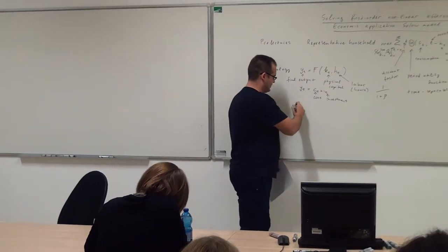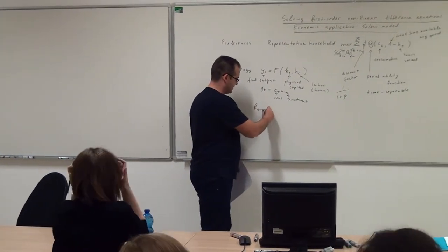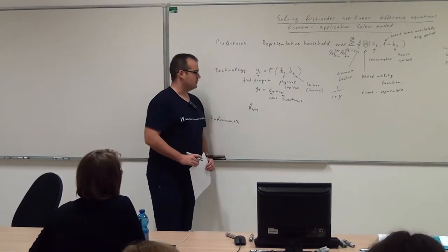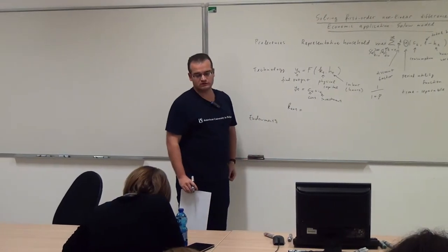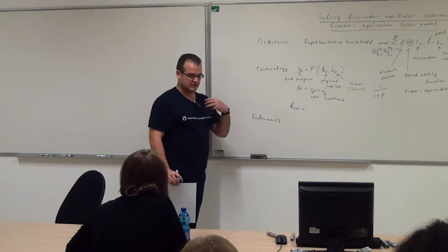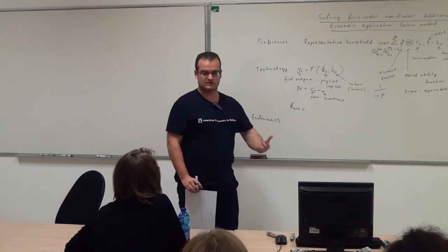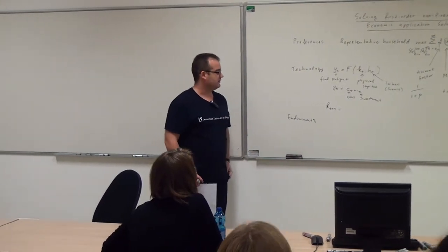All right, and the last equation has to do with capital accumulation. Physical capital is crucial in a dynamic model because that's the variable that links different periods.